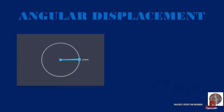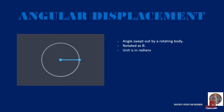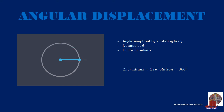Angular displacement is the first parameter to be discussed in rotational motion. Notated as theta, this is the angle swept out by the rotation. Note that the unit of theta is in radians, where one revolution or 360 degrees is equal to 2 pi radians.